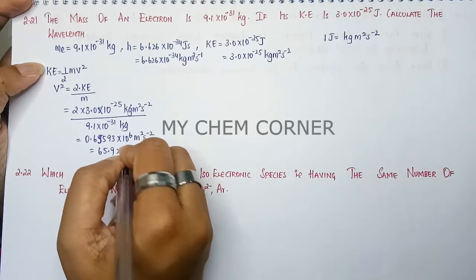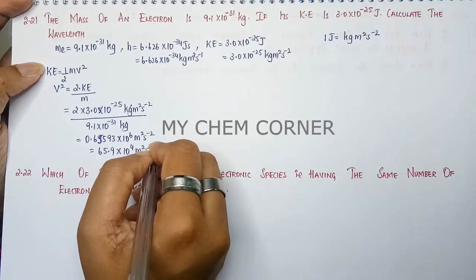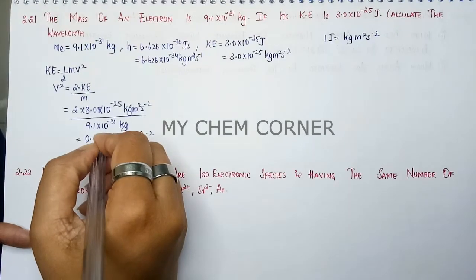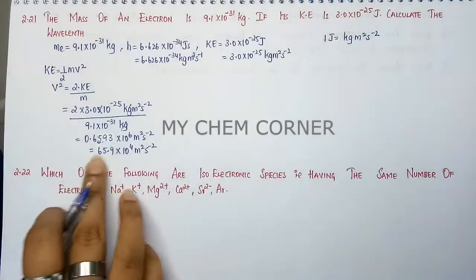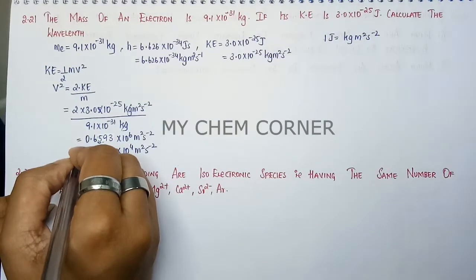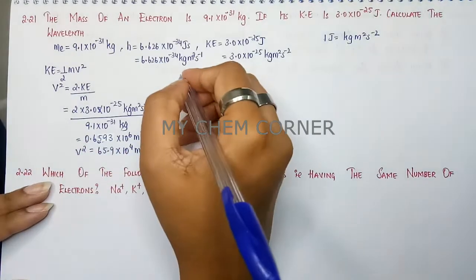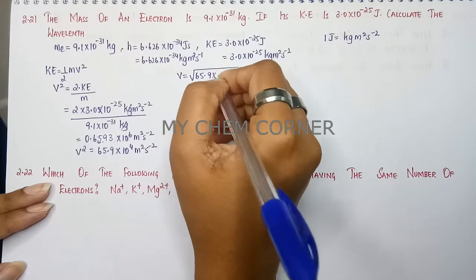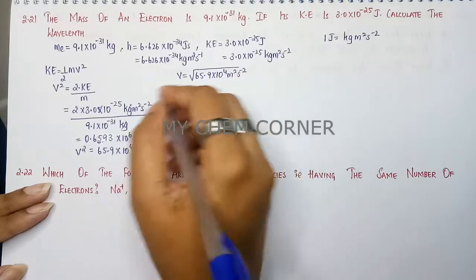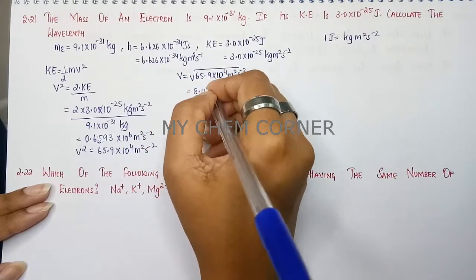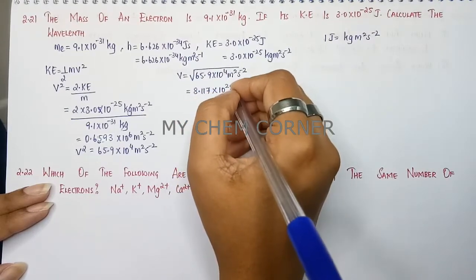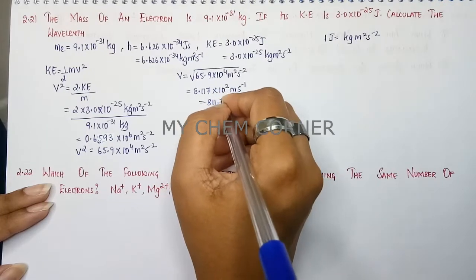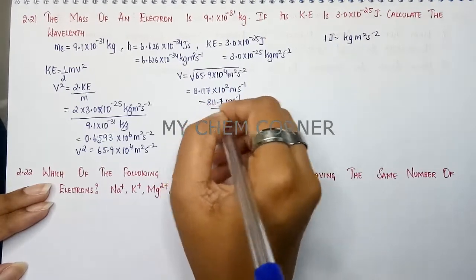This value is 65.93 × 10⁴ m²·s⁻². Since this is v², we take the square root: v = √(65.9 × 10⁴) = 8.117 × 10² m·s⁻¹. Shifting the decimal, the velocity of the electron is approximately 8117.7 m/s.